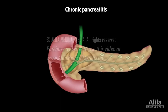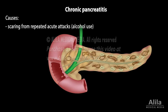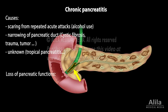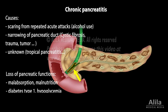The pathogenesis of chronic pancreatitis is less clear. In some cases, scarring accumulated from repeated acute attacks eventually leads to chronic disease. Other cases are linked to factors that cause narrowing of the main pancreatic duct. For many cases, the cause is unknown. Chronic disease can eventually lead to loss of pancreatic functions, which manifest as malabsorption, malnutrition, type 1 diabetes, and hypoglycemia. The risk for pancreatic cancer is also increased.